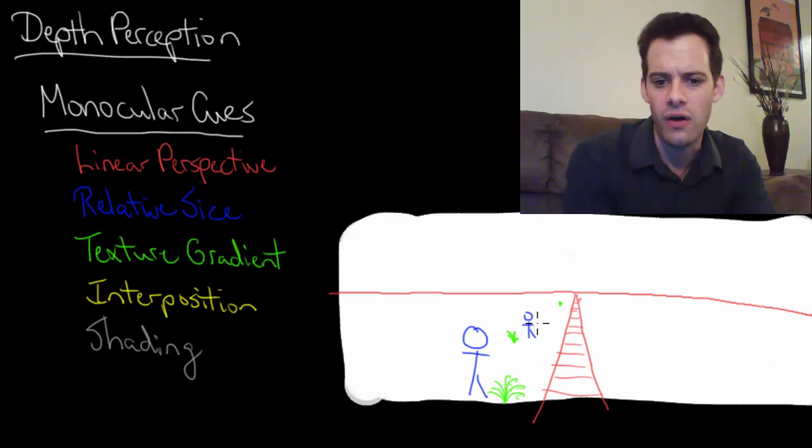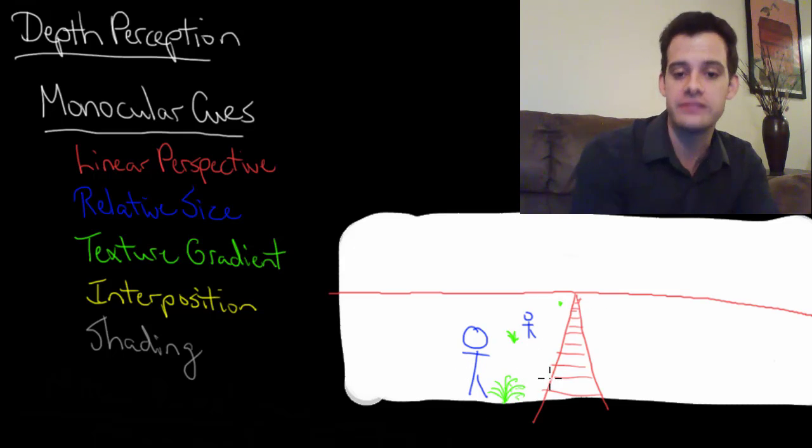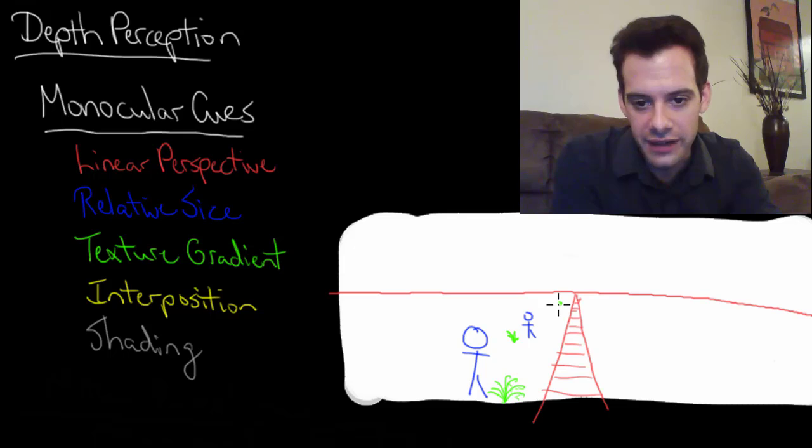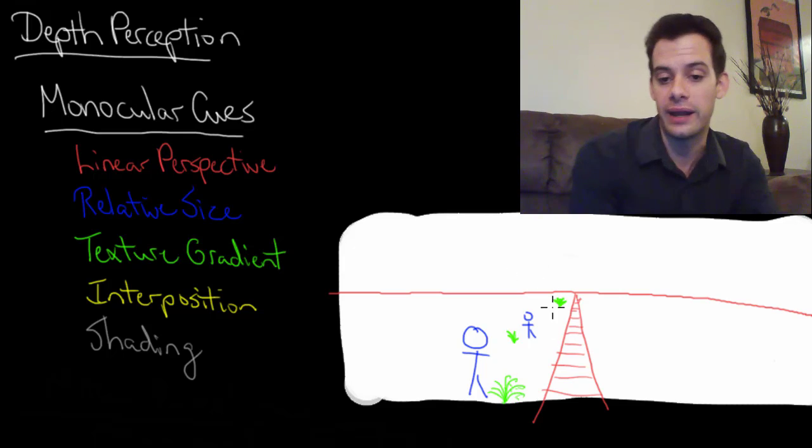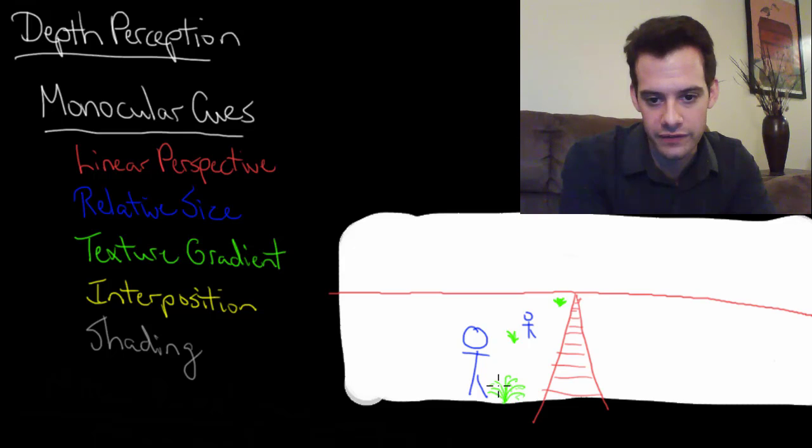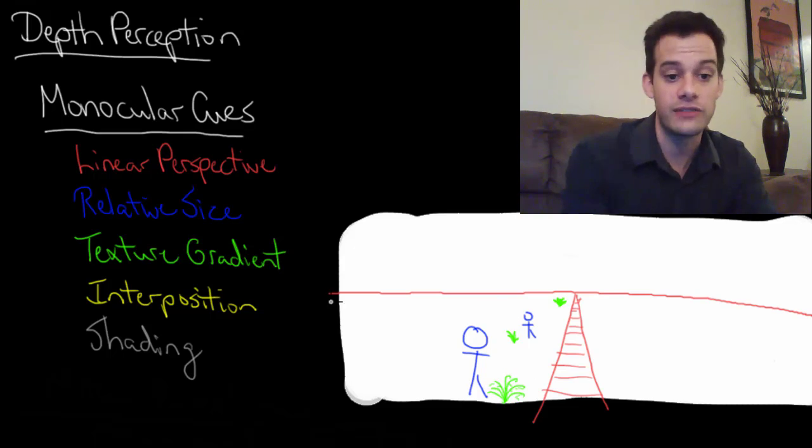We can't really see much detail at all. Now I've also added some relative size here but we can imagine that even if this one was a much larger plant, it's similar in size to the other one but we can't see as much detail. And that tells us that it's farther away. Whereas this one we can see all of the fine detail. So that's texture gradient.